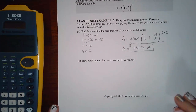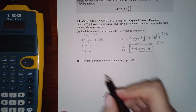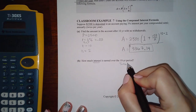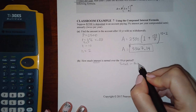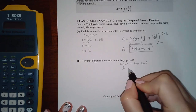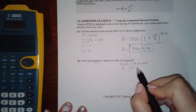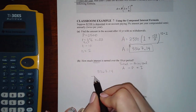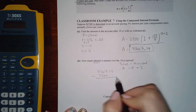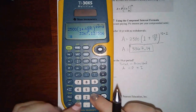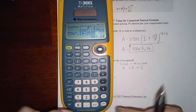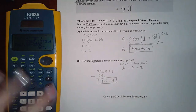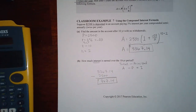Now how much interest is earned over the 10-year period? They just want the interest, not the total amount. To find that, you take the total and subtract the principal: A minus P. So 3,367.14 minus 2,500 gives us $867.14 — that's how much interest was made off the $2,500 deposit over 10 years.